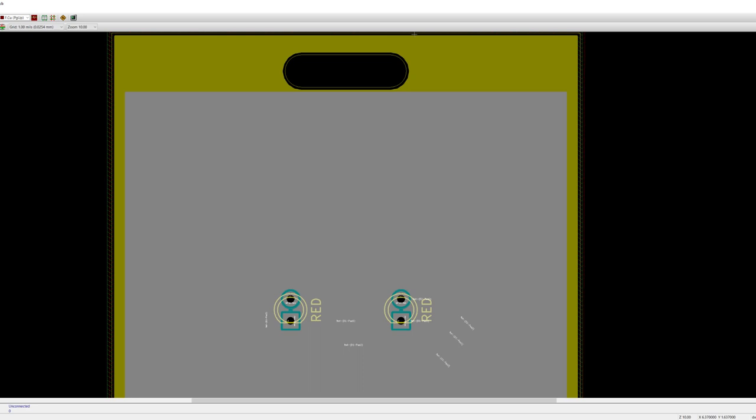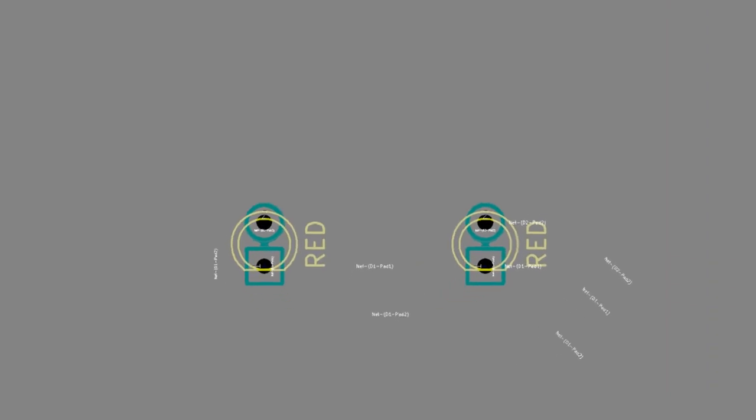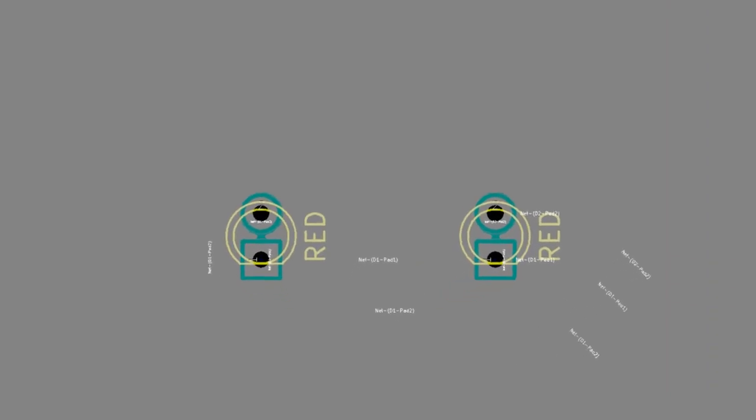There are no clear polarity markings on the LEDs as we covered them with our silkscreen canvas. If you look at the layout for D1 and D2, you can see that the front fabrication layer shows the flat edge of the LEDs pointing down.